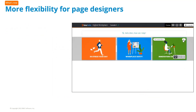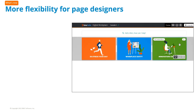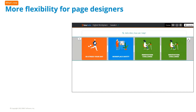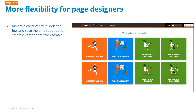Copy and paste an entire row of components or individual components within rows, between rows, and between pages. You can also use standard keyboard shortcuts to copy and paste. Maintain consistency in the look and feel, and save the time required to create a component from scratch.